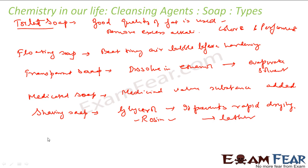Laundry soap is used to clean clothes. It has fillers like sodium rosinate, sodium silicate, and borax. In summary: toilet soap uses good quality fat, transparent soap is dissolved in ethanol, medicated soap has medicinal substances, and shaving soap uses glycerol or rosin.